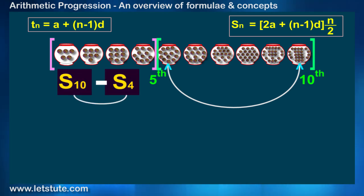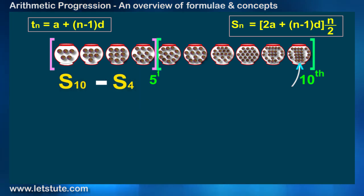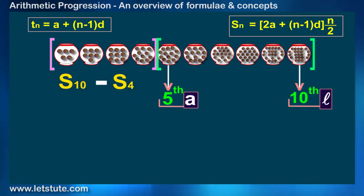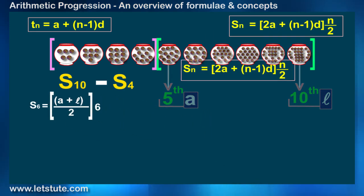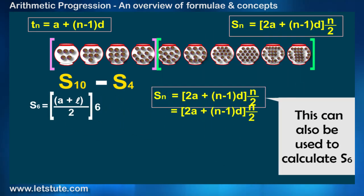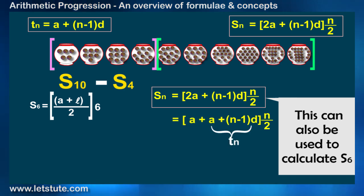There is one more way by which you can solve this. First find the 5th term and then the 10th term, which is actually the last term of the range. Then we have S6 which is equal to (A plus L) upon 2 into 6. Now this is the average of the first and the last term multiplied by the number of terms. This formula is derived by the original formula only. Like if I consider my Tn as the last term of the sequence, A plus L multiplied by n by 2, which is nothing but the average of the first and last term into the number of terms.